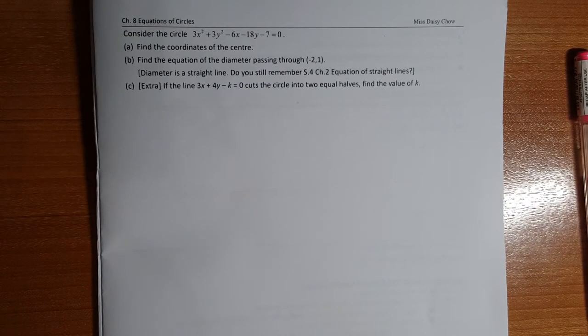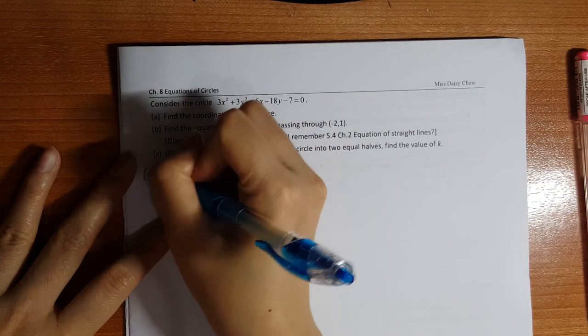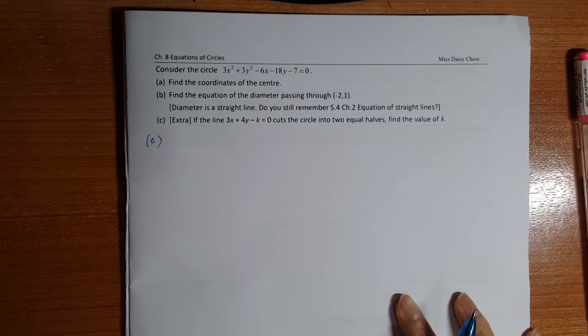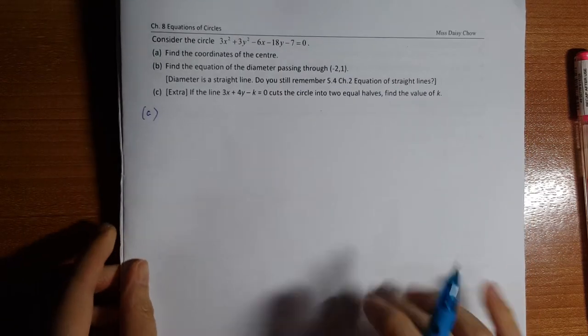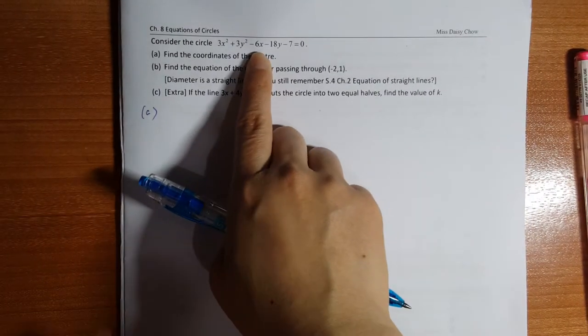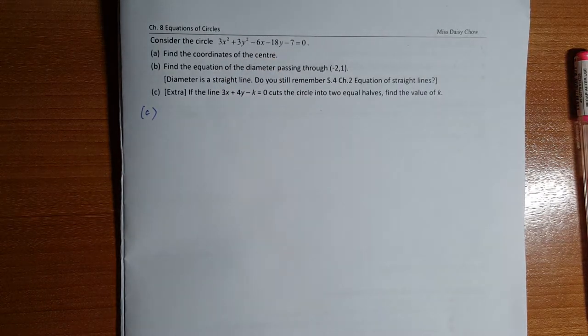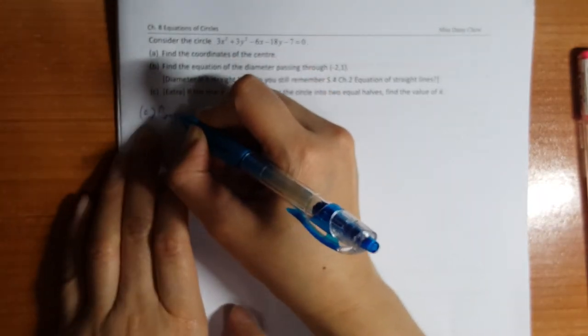the question asks you to find the coordinate of the center. So part a, when you want to find out the coordinates, before you do anything, make sure that you have to check whether this one is in the general form. So very obvious is not, that means the whole equation you have to divide it by three.